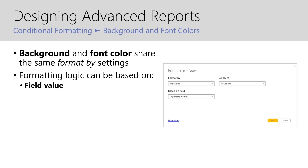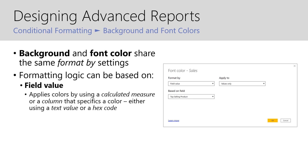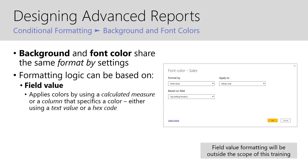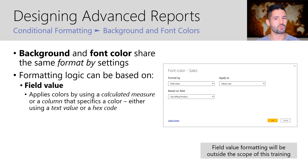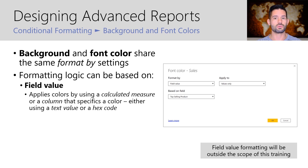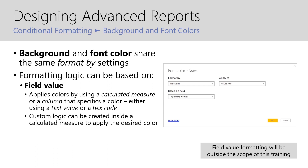Last but not least, formatting logic can also be based on field value, which will apply colors by using a calculated measure or a column that specifies a color, either using a text value or hex code. While we will implement these in the report, creating the actual DAX measures won't be covered in this training since that is model development. However, field values are great for reusing logic — a single measure with color formatting logic can be used across multiple tables or visuals, saving you a lot of time versus setting up rule logic over and over per visual. I'll link you to a video in the references that shows how to create and use field values, and custom logic can be created inside a calculated measure to apply the desired color.